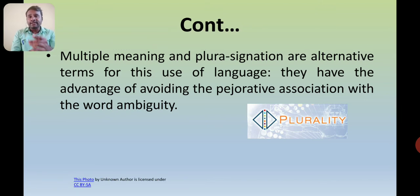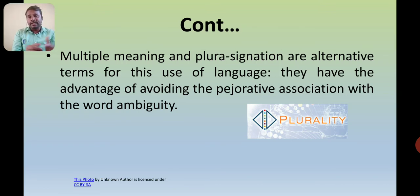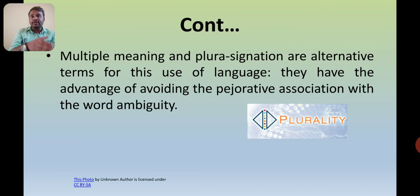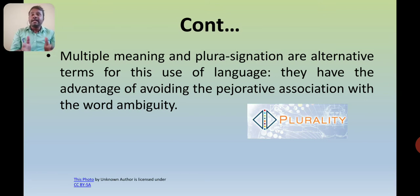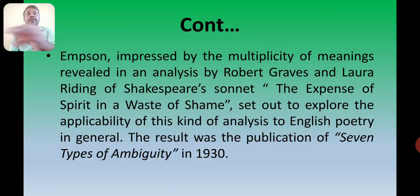Ambiguity means plural signation — signation means sign, and plural means more than one. Multiple meaning and plural signation are alternative terms for this use of language. You can call ambiguity multiple meaning, or ambiguity means plural signation. They have the advantage of avoiding the pejorative association with the word ambiguity.